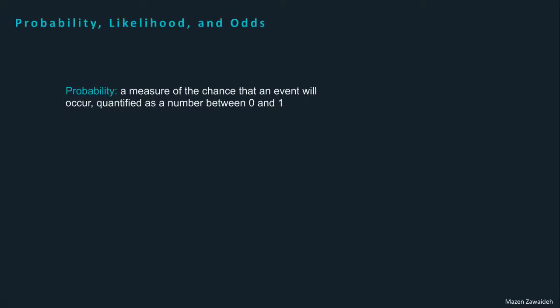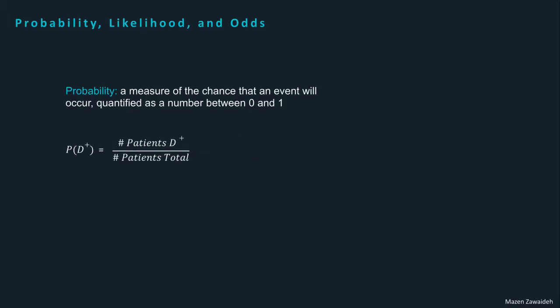First, a few important concepts and definitions we'll need going forward. Probability is a measure of the chance that an event will occur, quantified as a number between 0 and 1. An outcome is a possible result of a probabilistic experiment. Probability is calculated as follows: for a given experiment, we take the number of times an outcome of interest occurs and divide it by the total number of all outcomes. For example, if we're interested in calculating the probability of a disease being present, with 100 total patients and 20 who have the disease, we divide 20 by 100 to get a probability of 0.20, or 20%.